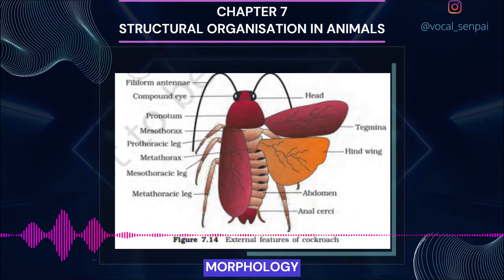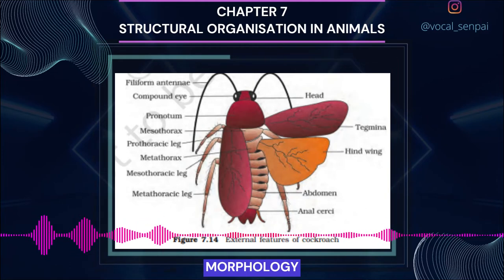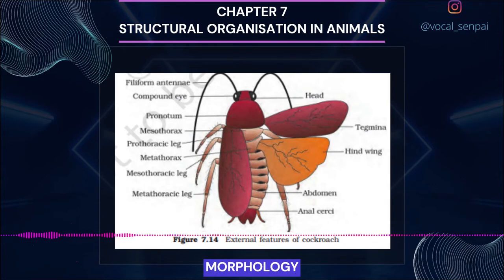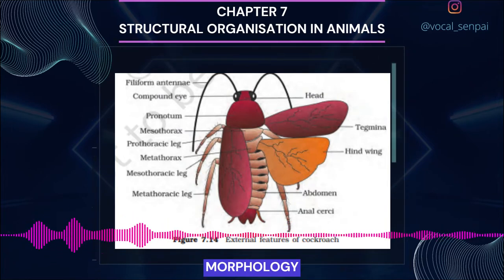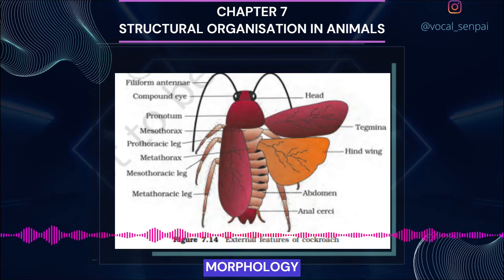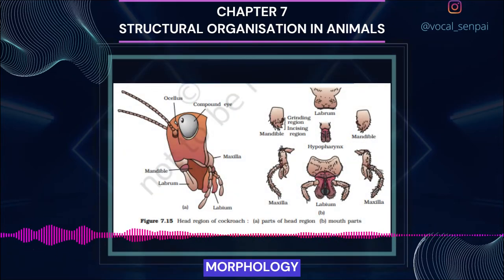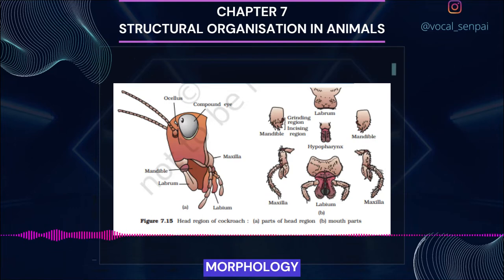The head capsule bears a pair of compound eyes. A pair of thread-like antennae arise from membranous sockets in front of the eyes; antennae have sensory receptors that help in monitoring the environment. The anterior end of the head bears appendages forming biting and chewing type mouthparts. The mouthparts consist of a labrum (upper lip), a pair of mandibles, a pair of maxillae and a labium (lower lip). A median flexible lobe acting as a tongue, the hypopharynx, lies within the cavity enclosed by the mouthparts (figure 7.15b).